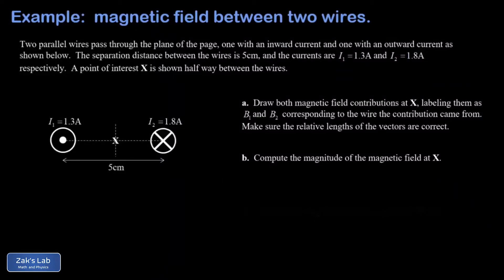In this problem, we're presented with two current-carrying wires that are perpendicular to the plane of the page. The one on the left has a current coming out toward us, and the one on the right has a current going in away from us. The currents are different.